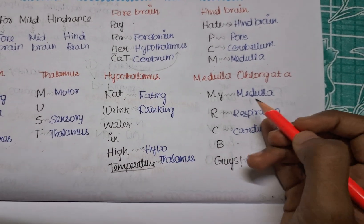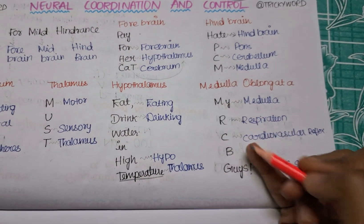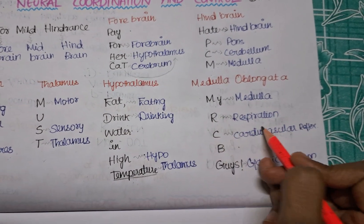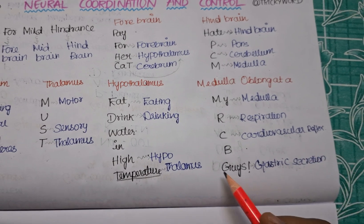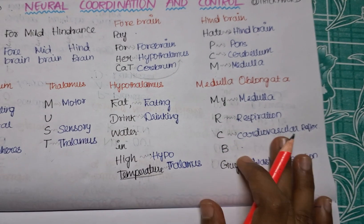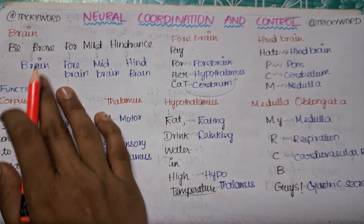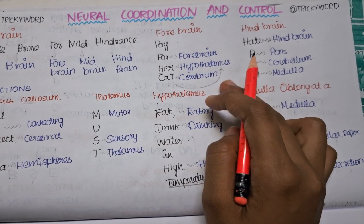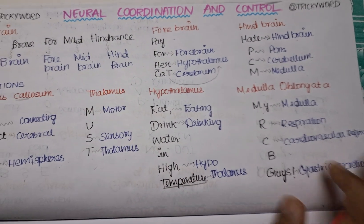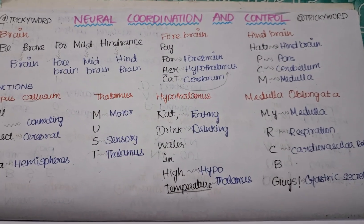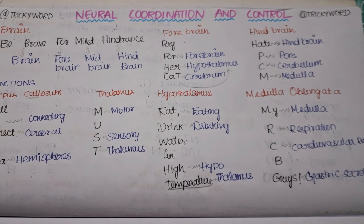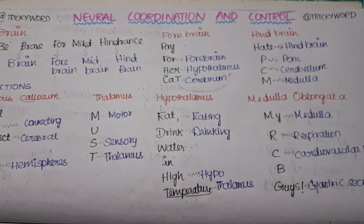For medulla oblongata, the trick is 'My RCB guys' — for all the cricket fans! My is for medulla, R is for respiration, C is for cardiovascular reflex, and Guys is for gastric secretion. So those are the functions handled by the medulla oblongata. I've already mentioned a playlist where all tricks are compiled — if this felt fast, watch it in slow mode. Join the Telegram channel, and see you in the next video!